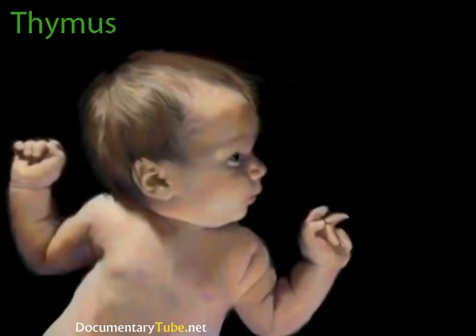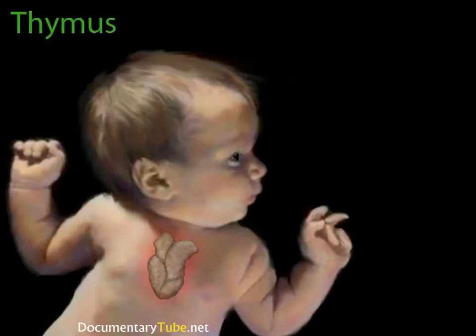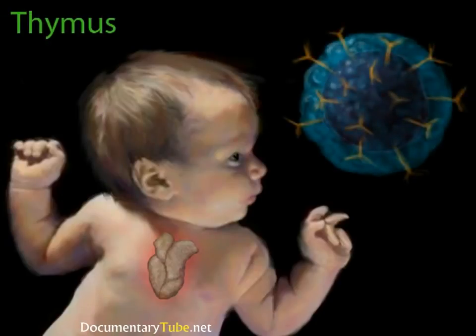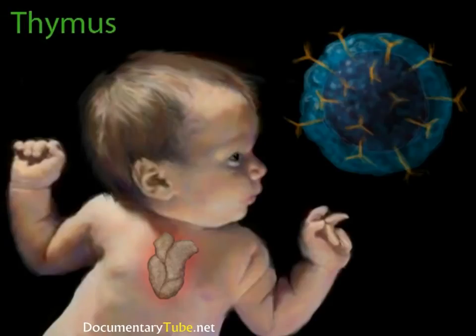Another lymphatic structure is the thymus gland. Like the tonsils, the thymus gland changes as a person matures. When a person is young, the thymus gland is large in proportion to body size and is mostly lymphatic tissue. After puberty, it decreases in size and becomes mostly fibrous and fatty tissue. While a person is young, immature lymphocytes known as T-lymphocytes leave the bone marrow and travel to the thymus in a remarkable maturation process sometimes referred to as thymic education. T-lymphocytes that are beneficial to the immune system are spared, while those that might evoke a detrimental immunological response are eliminated.